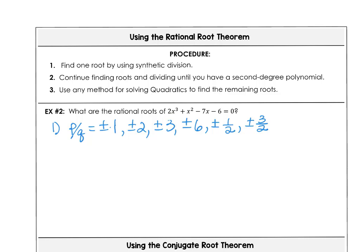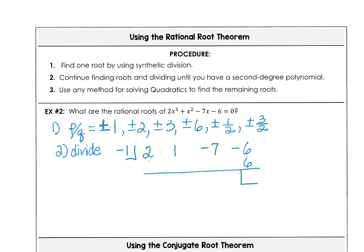We pick any number from the list to try. I like to start with positive 1 or negative 1. Looking at the polynomial with coefficients 2, 1, −7, −6, I need to end up with positive 6. Trying negative 1: bring down the 2, 2 times −1 is −2, −1 times −1 gives +1, −7+1 is −6, and we do get positive 6. So we found a zero at x = −1.